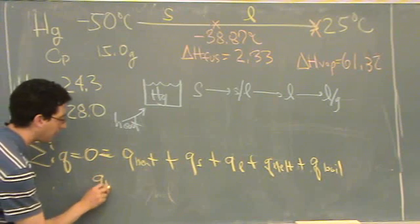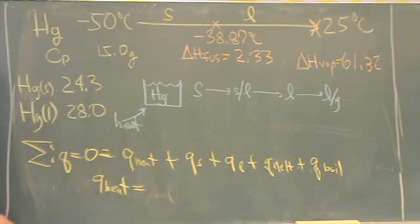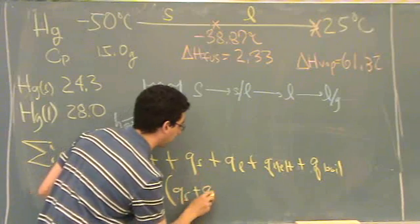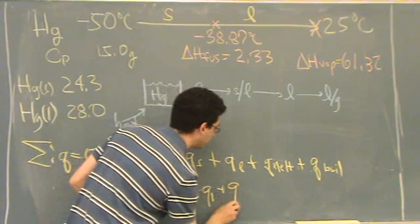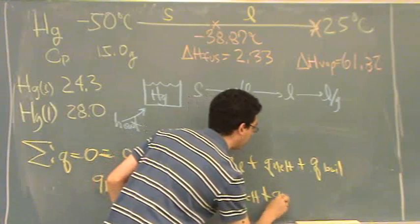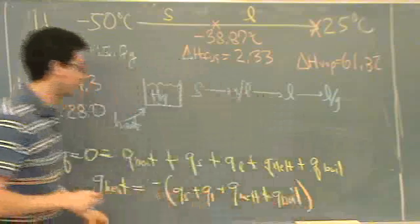So q of the heat, that's what you're solving for, how much heat to put in, is minus q of the solid, plus q of the warming of the liquid, plus q of melting, plus q of boiling. It's all that stuff.